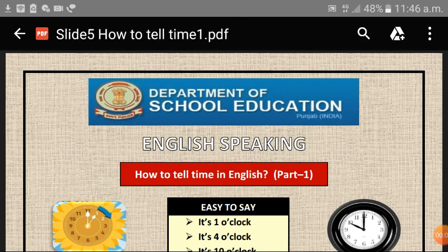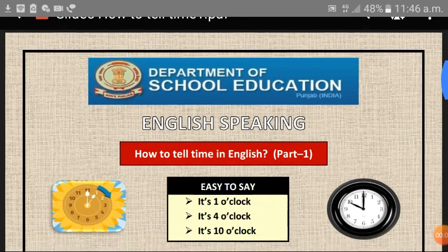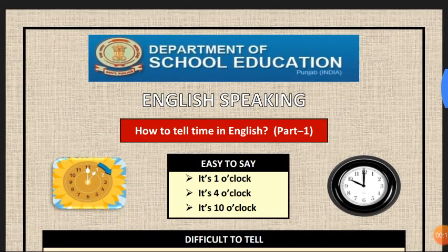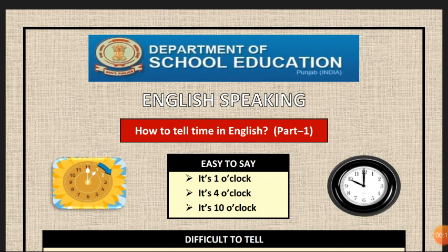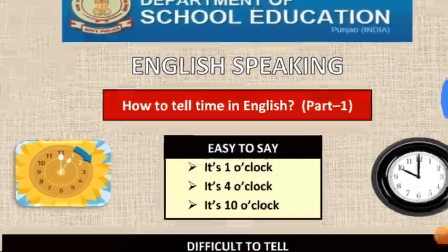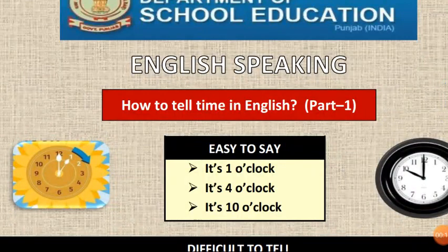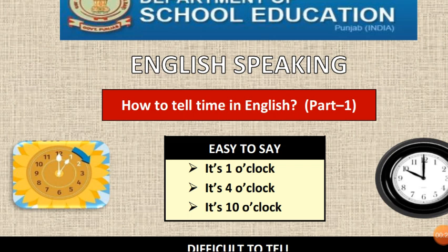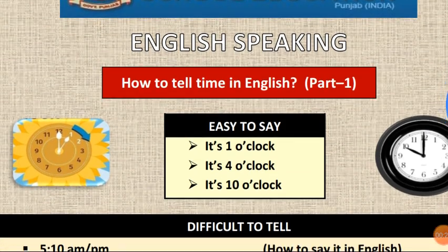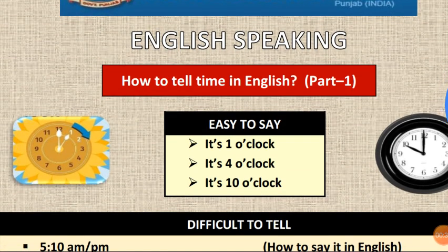Today, we are going to learn how to tell time in English. If anybody asks you, what is the time? If it's 1 o'clock, it's 1 o'clock. If it's 4 o'clock, it's 4 o'clock. If it's 10 o'clock, it's 10 o'clock. It's very easy to say all these things in English.